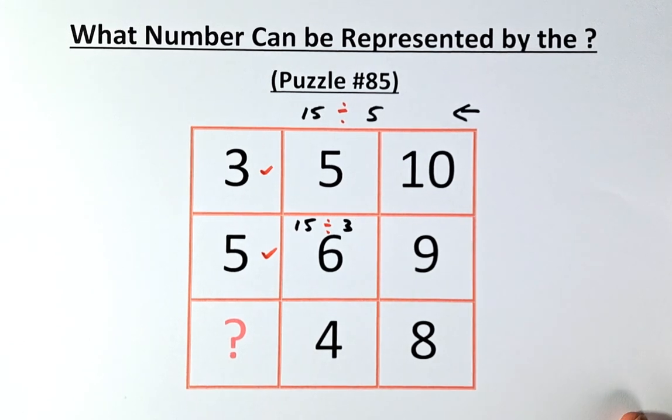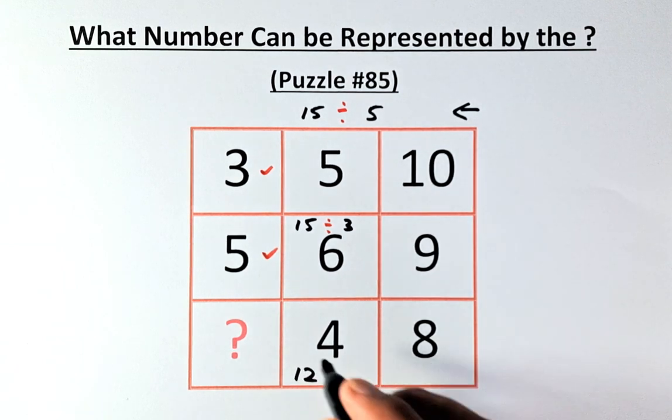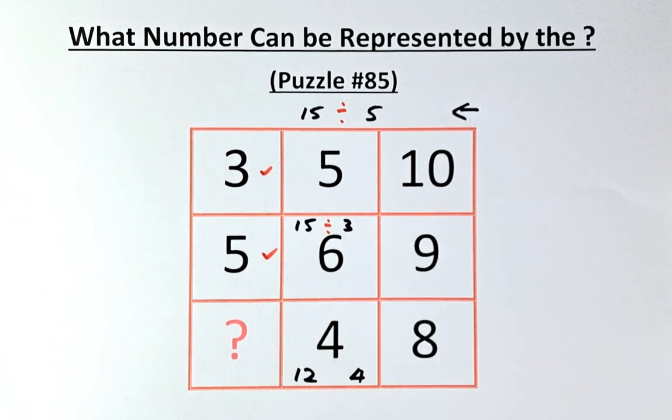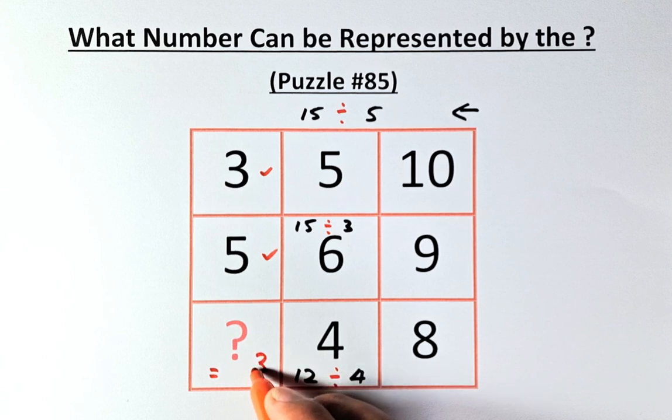So similarly, in our last row, we have 8 and 4. So 8 plus 4 is going to be 12. 8 minus 4 is going to be 4. And then we're going to divide 12 divided by 4. And the answer for the question mark is going to be equals to 3.